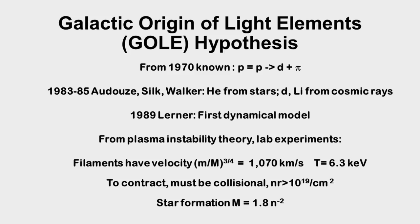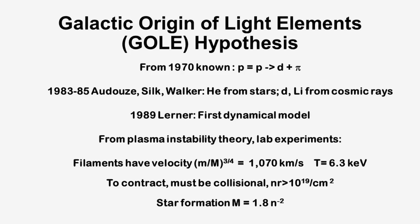From 1970, it was known that deuterium, the heavier isotope of hydrogen, could be produced by cosmic rays, by the collision of a proton with another proton, producing deuterium and another particle called the pion, which decays rapidly. Then in the middle of the 1980s, several researchers — Adus, Silk, Walker — pointed out that helium is being produced by stars.